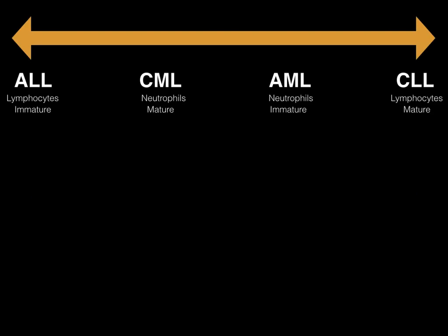Now let's fill in basic information we can discern about these leukemias just from their names. If it's acute, it means immature — there are blast cells produced by the bone marrow at very early stages of cell differentiation. Contrast that to a chronic leukemia, where the cells are mature — they have grown throughout their cell cycle. If it's lymphocytic, it's lymphocytes. If it's myeloid, it's neutrophils. These are our four different types on the spectrum.